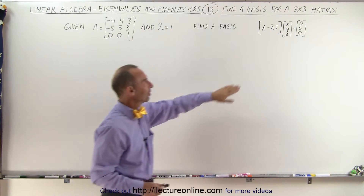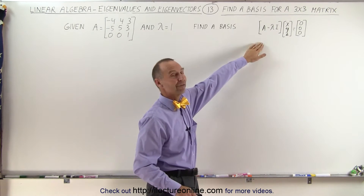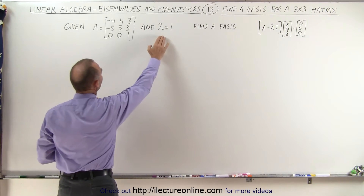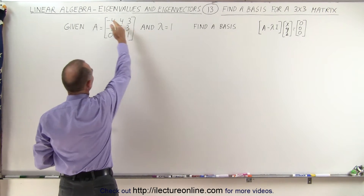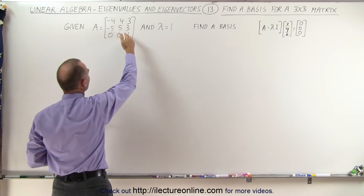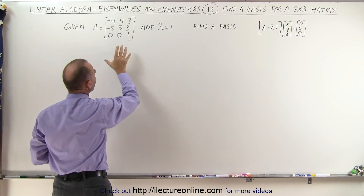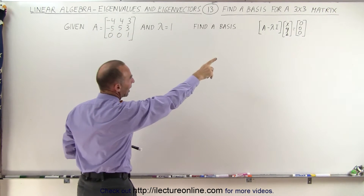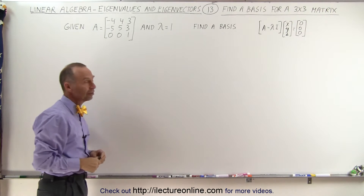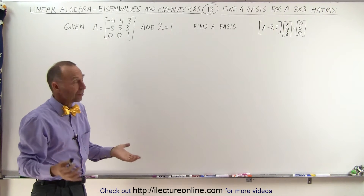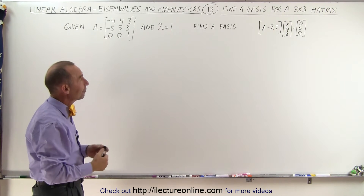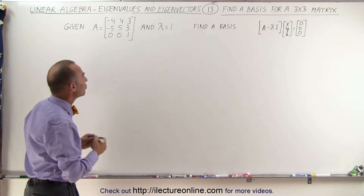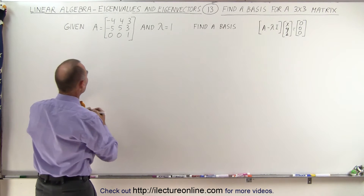We're using the same technique to find the eigenvector. We're going to subtract the eigenvalue from each of the diagonal elements, and then multiply that resulting matrix times the eigenvector x, y, and z — the unknown eigenvector — and set it equal to the null vector, or the zero vector.